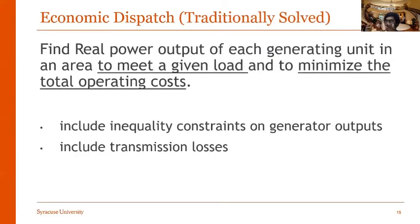Economic dispatch finds the real power output of each generating unit in an area. The main objective is to meet a given load demand and minimize the total operating costs. This includes inequality constraints on generator outputs and also includes transmission line losses.